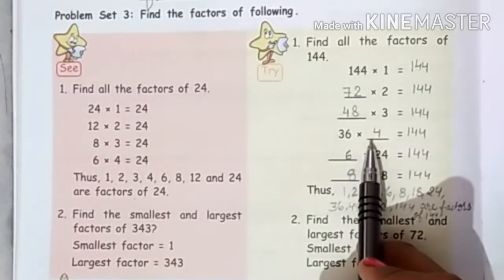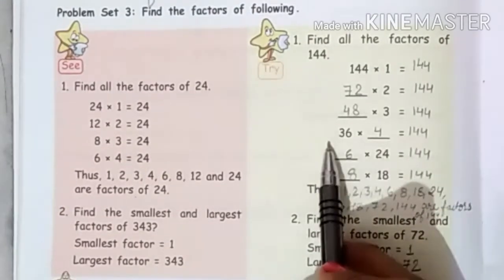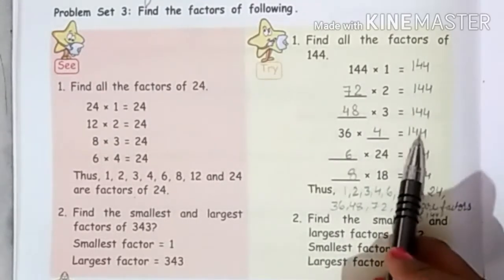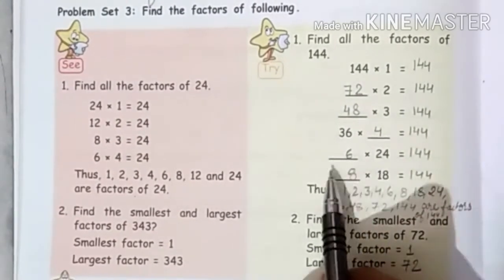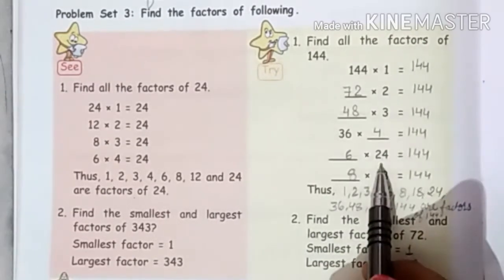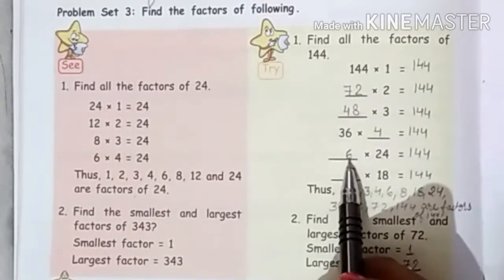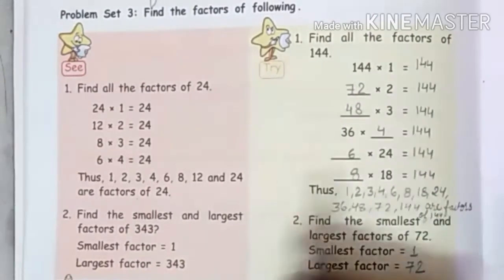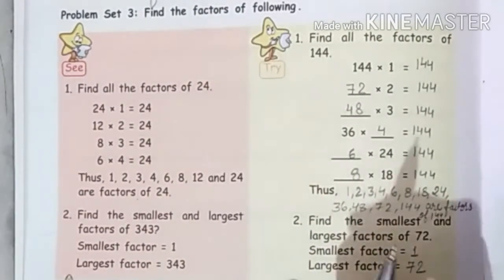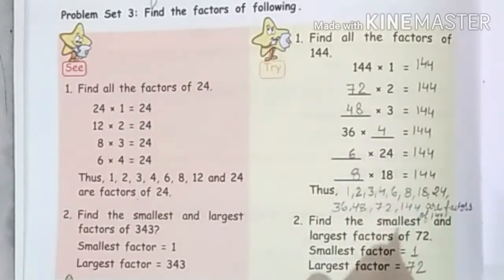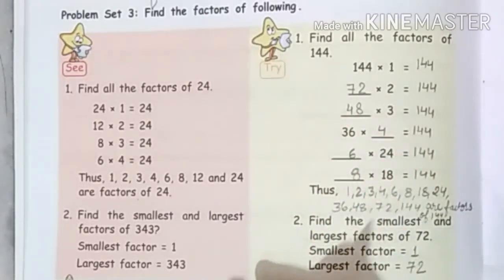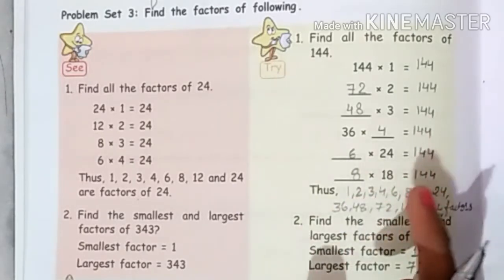144 when we divide it by 4, it is fully divisible, 36 times. It means that 36 and 4 are both factors. If you divide it by 6, it is 24 times. If you divide it by 8, it is 18 times divisible. So the quotient and divisor will be both factors.